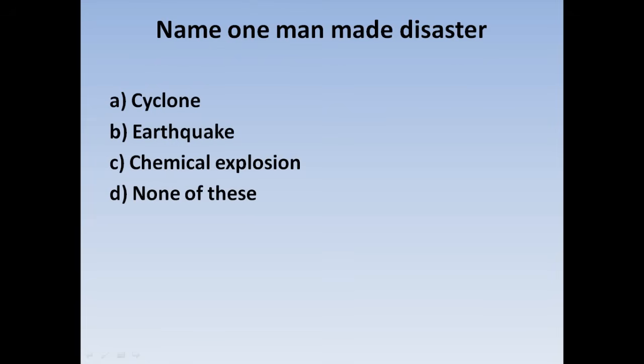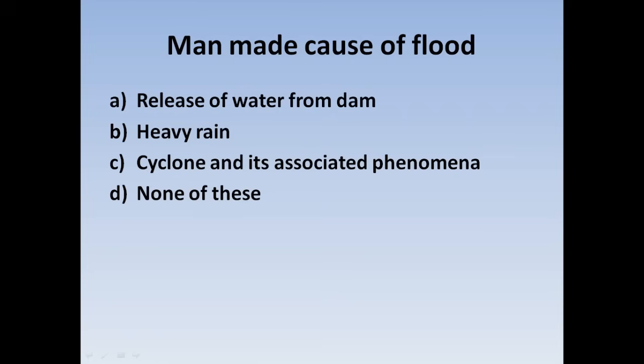Next question: Name a man-made disaster — Option A: Cyclone, Option B: Earthquake, Option C: Chemical explosion, Option D: None of this. Cyclone and earthquake are natural disasters. Chemical explosion is a man-made disaster. Correct answer: Option C, Chemical explosion.